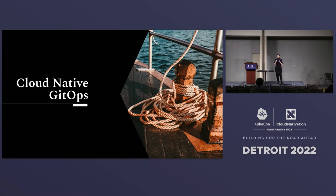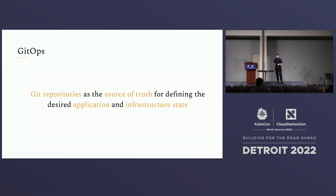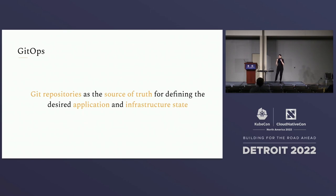Here's where we can use GitOps as well. Since Cluster API introduces YAML manifests to define your infrastructure as code, we can use GitOps. GitOps refers to Git repositories to define the desired state of your application and, in our case, our infrastructure.